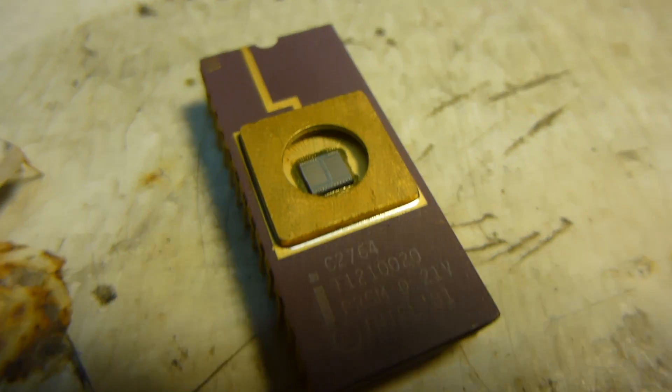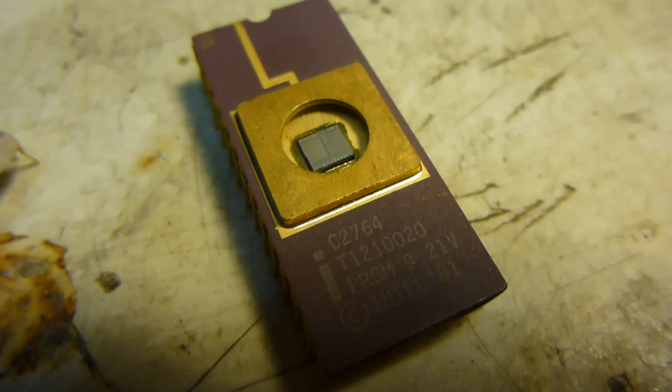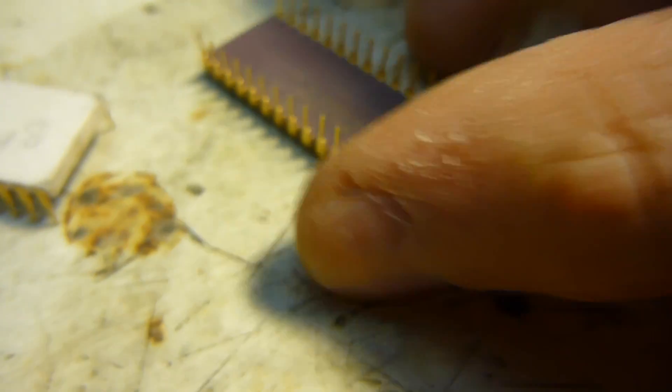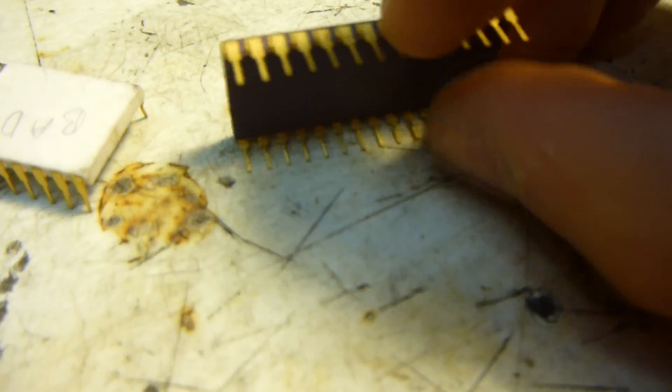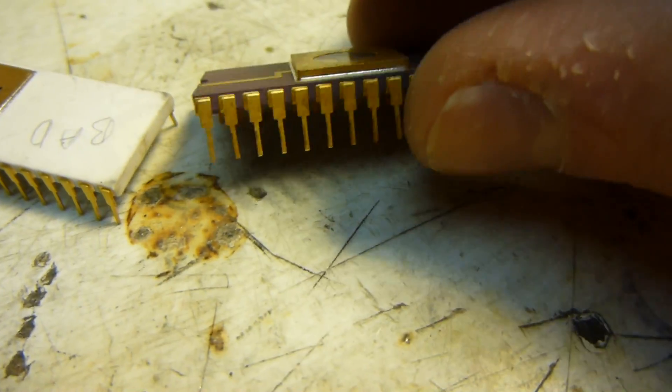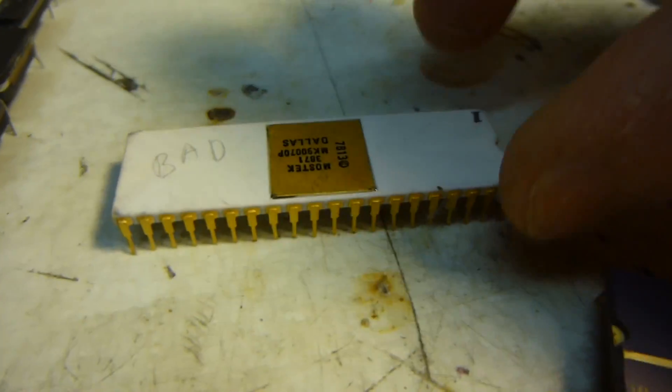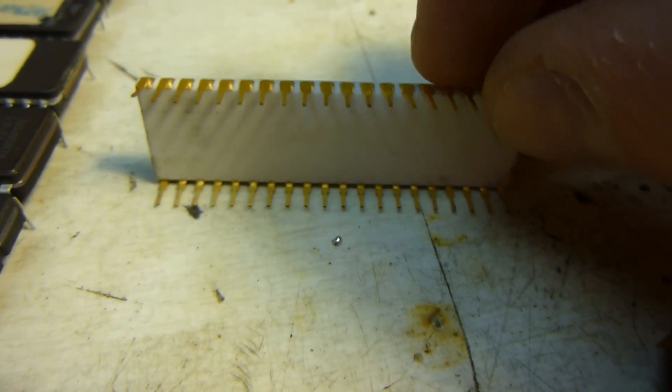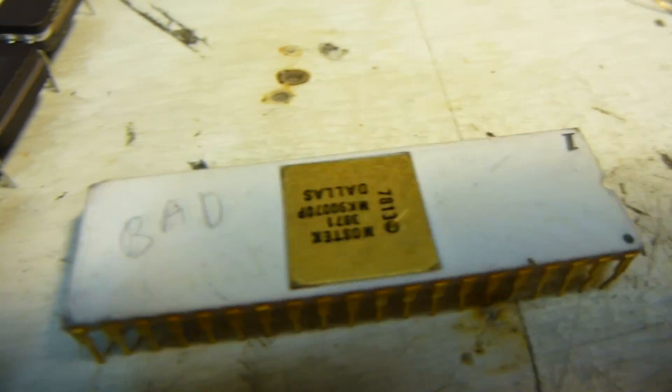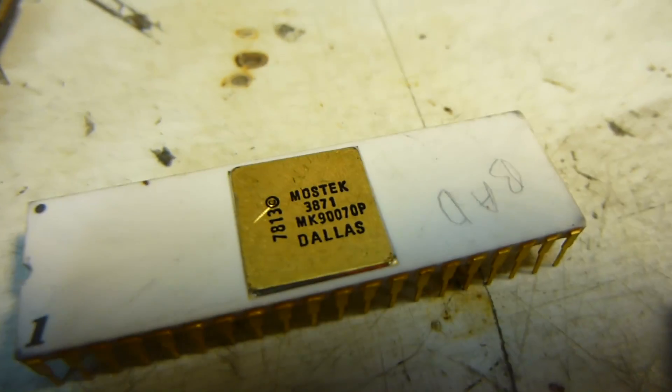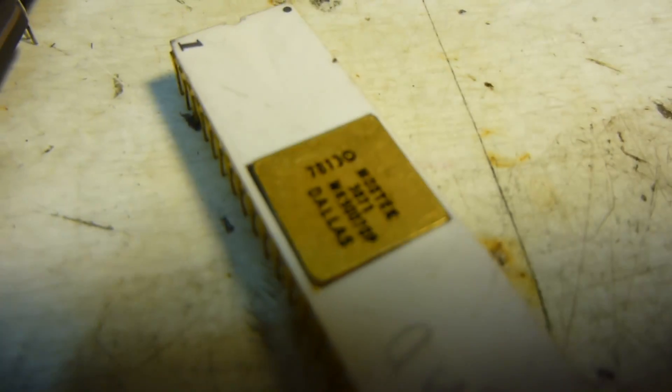So there's 1981 EPROM of some sort, it's an Intel. But it's quite pretty, it's gold. And then this one, it says Battelle actually. This is like a ceramic one as well, very thin. And then this one is Mostek, I've never heard of that company before. And that's I guess it's 79.